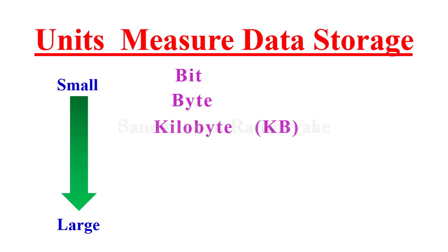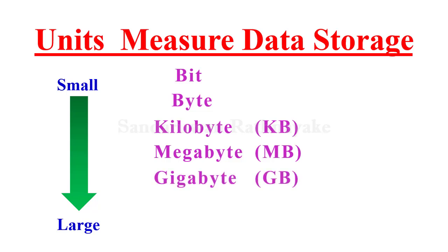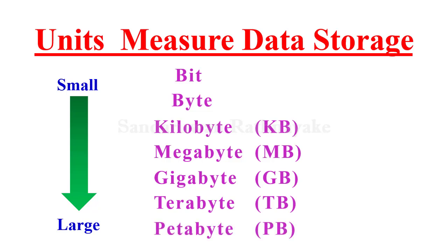What is a kilobyte? If you want to see the units: kilobyte is KB, megabyte is MB, gigabyte is GB, terabyte is TB, and petabyte. So the units in order are: bit, byte, kilobyte, megabyte, gigabyte, terabyte, and petabyte. You can use these as measuring units for data storage.